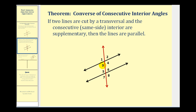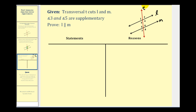So this is saying if angle three and angle five are supplementary, then the lines would be parallel. Or if angles four and six are supplementary, then the lines would be parallel. Let's go ahead and set up a two-column proof for this theorem. We're given that transversal T cuts line L and line M, with angle three and angle five supplementary — these two angles here are supplementary.